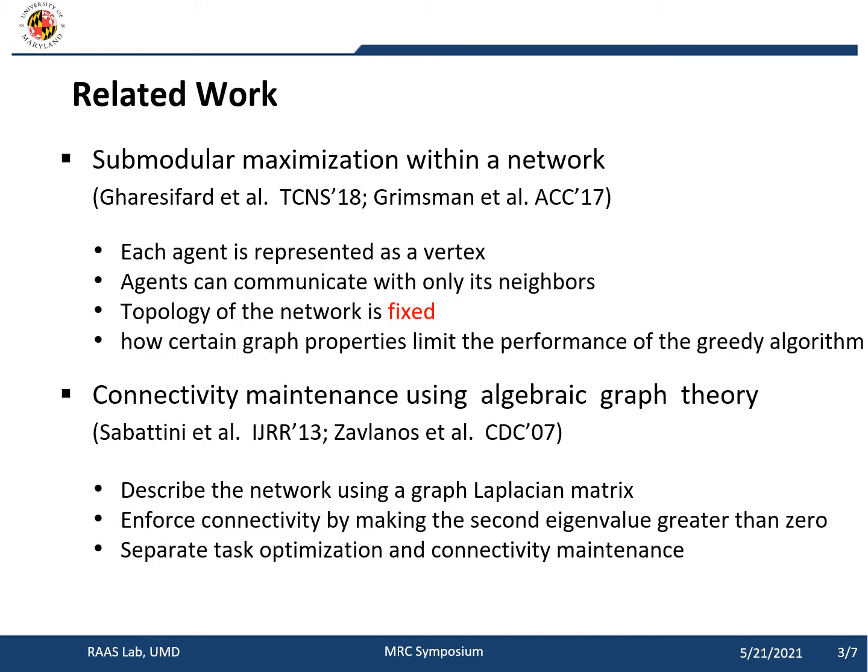This paper is related to two lines of works. The first line of work is on submodular maximization within a network. In these works, the topology of networks is usually fixed, and they don't consider the influence of the actions of robots on the network topology. Another line of work is on connectivity maintenance using algebraic graph theory. Our work is different in that we need to jointly consider a discrete optimization problem as well as connectivity.